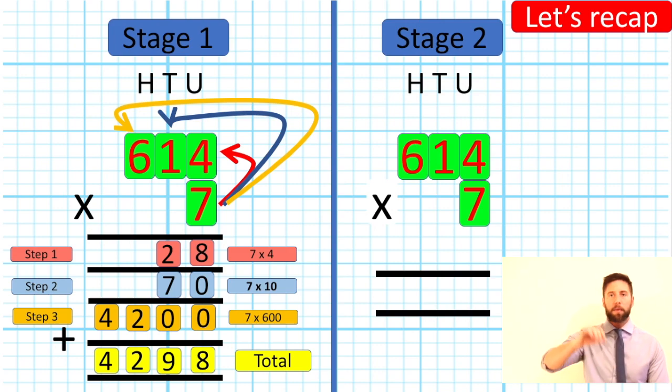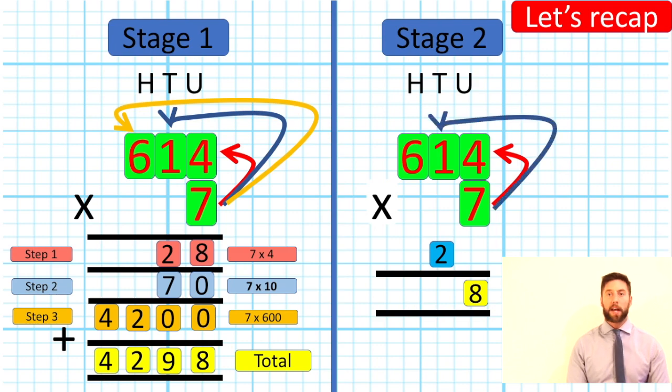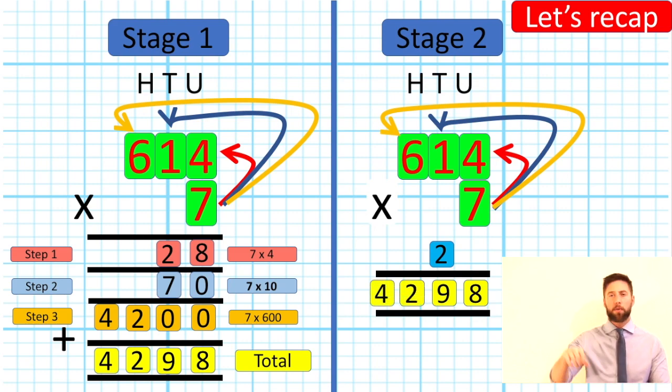Short method. Same thing. Lay it up. Get your units, tens and your hundreds in there. If you've got a four digit, you're going to need a thousand. And then let's start with step one. Doing our units again. 7 times 4 is 28. But we don't put 28. We put our 2 into our tens column ready for our tens answer. Step 2: 7 times 1 gives us 7. But don't forget that other 2. Leaves us 9. Nothing to carry on. Once you've done that, step 3: 7 times 6 is 42. Nothing to add on. So just put it in there. Gives us a grand total again: 4,298.